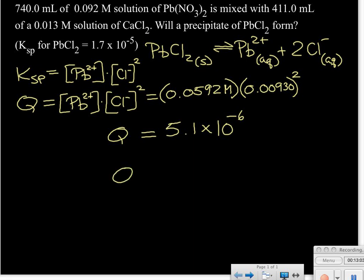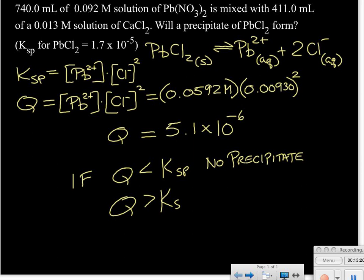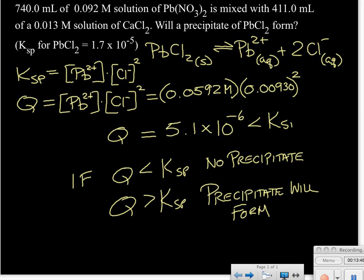If Q is less than Ksp, no precipitate will form. If Q is greater than Ksp, a precipitate will form. In this case, our Ksp is 1.7 times 10 to the minus fifth, and our Q is 5.1 times 10 to the minus sixth. Since Q is less than Ksp, we will not form a precipitate. The concentrations of our lead ion and chloride ion, when multiplied together, were not sufficient to reach the saturation point. We were not at equilibrium — we simply didn't have enough ions to form the solid.